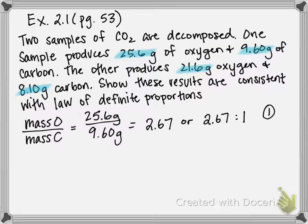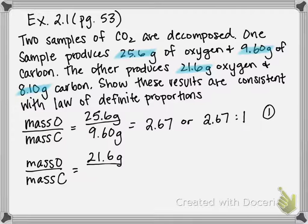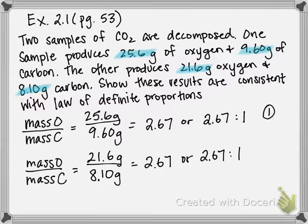So once again it's going to be mass of oxygen over mass of carbon. And this time it's going to be 21.6 grams of oxygen over 8.10 grams of carbon. And that if you divide the two also gives you 2.67 or 2.67 grams of oxygen per one gram of carbon. And that's ratio number two.